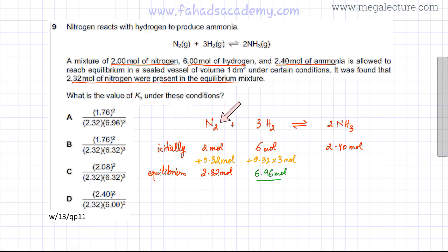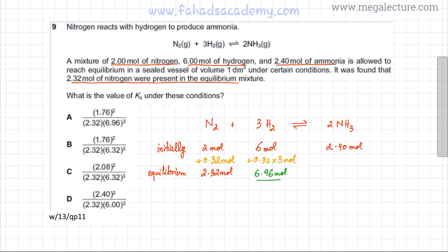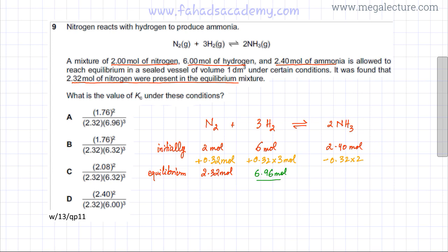Similarly, from the 2:1 ratio, 2 moles of NH₃ are consumed for every 1 mole of N₂ produced. Since 0.32 moles of N₂ were produced, 0.32 × 2 = 0.64 moles of NH₃ were consumed. Starting from 2.4 moles, the equilibrium moles of NH₃ are 2.4 − 0.64 = 1.76 moles.